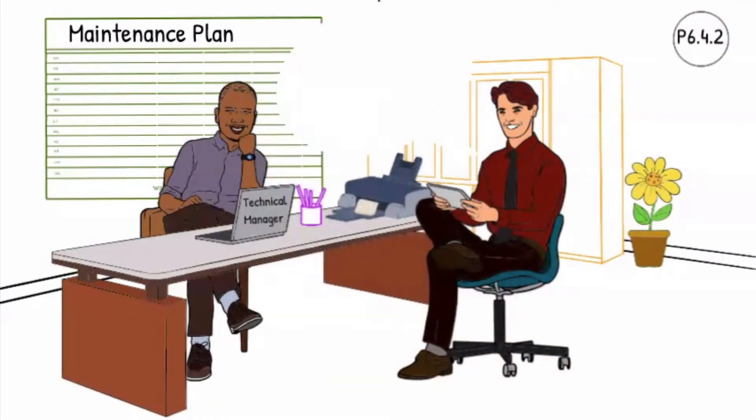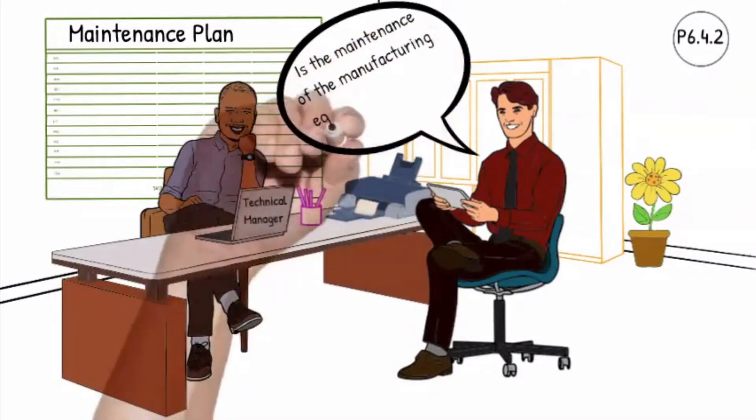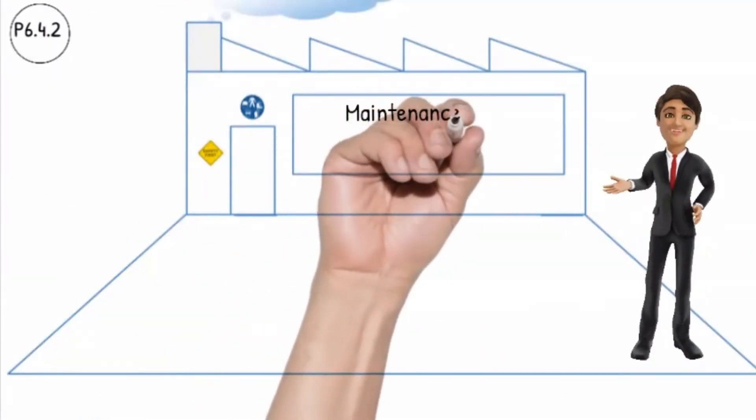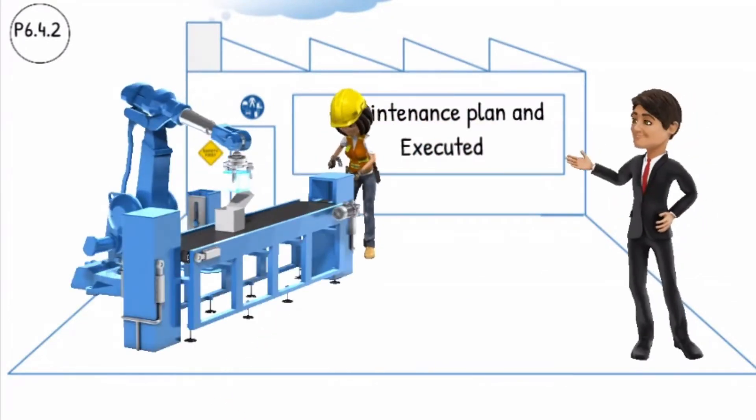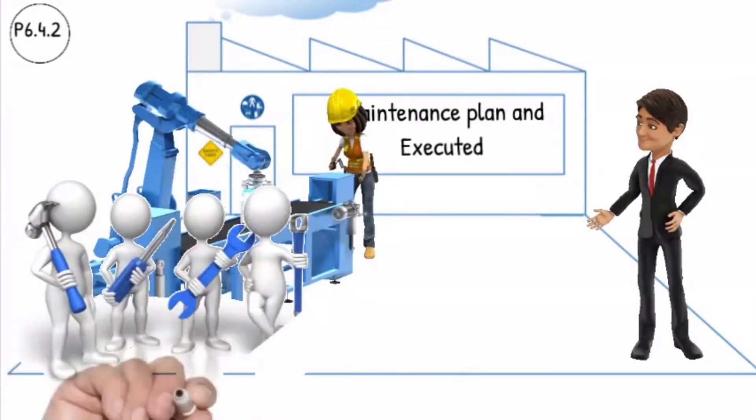P6.4.2 Is the maintenance of the manufacturing equipment and tools controlled? We ensure that there are sufficient resources available for carrying out necessary maintenance activities, such as inspection and repair.